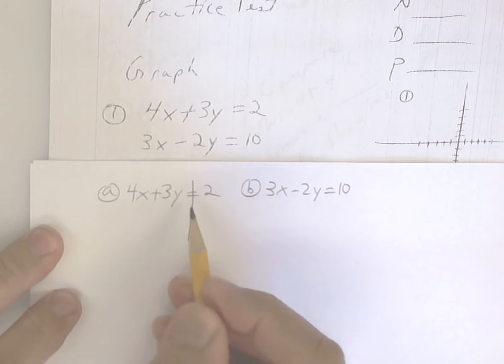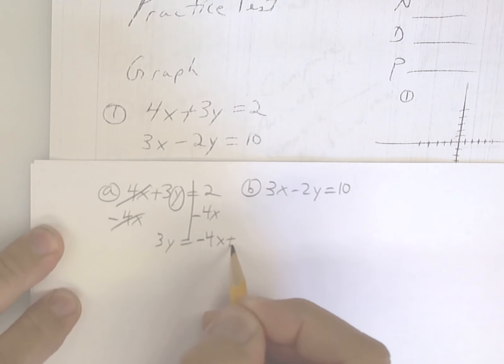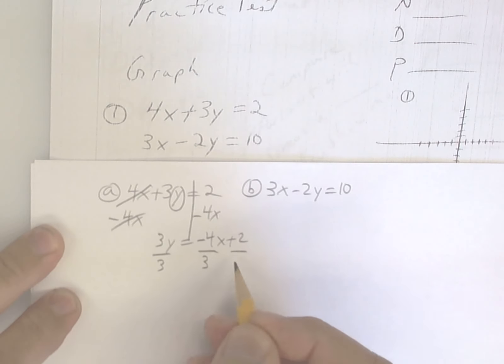To graph these, you're going to get y by itself. So you're going to subtract 4x and then divide by 3. When you divide by 3, you have your slope and your y intercept.